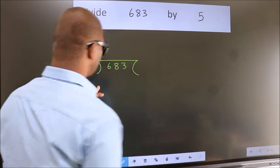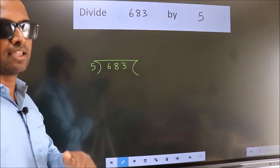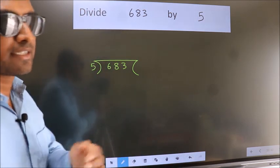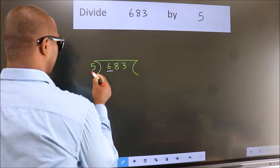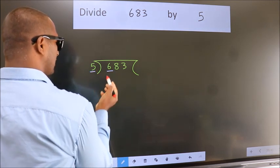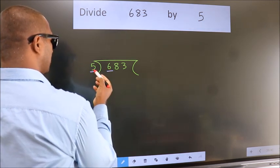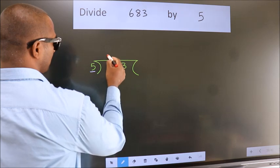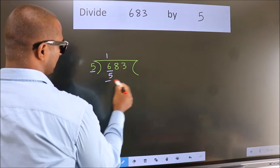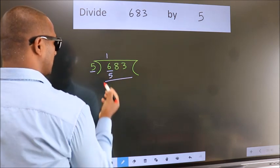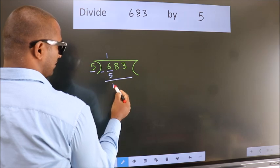This is your step 1. Here we have 6, here 5. A number close to 6 in the 5 times table is 5 once is 5. Now we should subtract. We get 1.